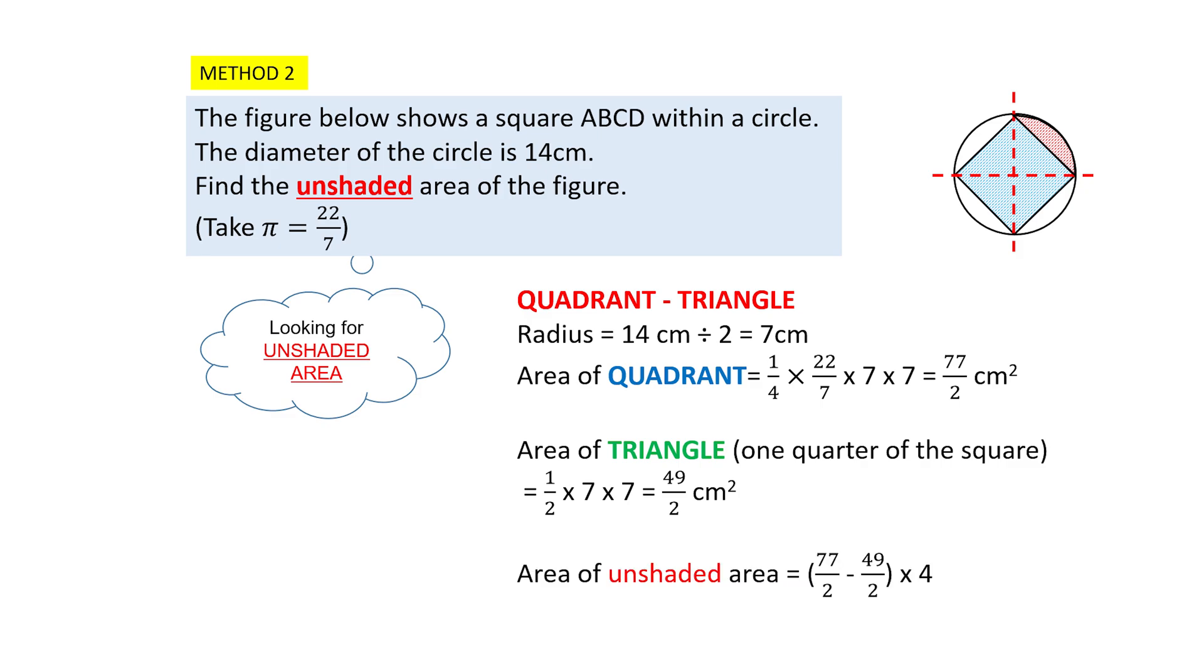The area of the unshaded region, which is that red section, is 4 sets. To find the area of the unshaded region, we will take the area of the quadrant minus the area of the triangle. And you will get that red section, but we need to multiply by 4 because there are 4 of them all around. So 77 over 2 minus 49 over 2, and you multiply by 4, will give you the answer 56 square centimeters.